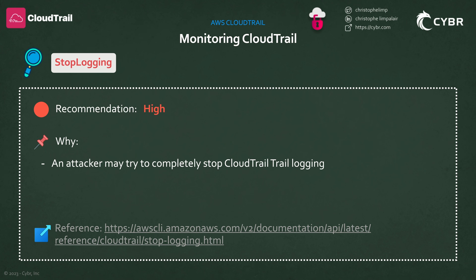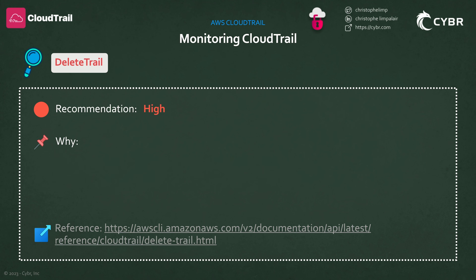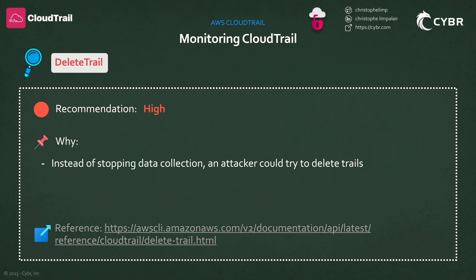The first API call that we should be monitoring is the StopLogging call. If an attacker gets a hold of credentials and starts making API calls against your environments, after doing some simple enumeration, they may try to completely stop CloudTrail from logging data. One way they can do that is with the StopLogging call. There are very few times that you should be calling this API, so monitoring this should not result in alert fatigue, and it's definitely one that I would recommend keeping an eye on. The next call I'd recommend watching is the DeleteTrail call — instead of just trying to stop a trail from logging, an attacker may try to completely delete it.